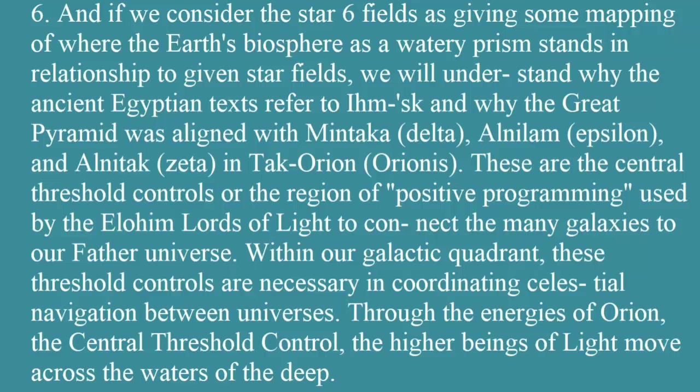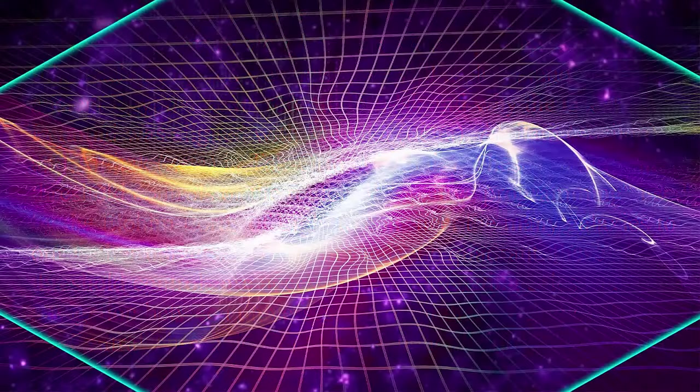These are the central threshold controls, or the region of positive programming used by the Elohim lords of light to connect the many galaxies to our father universe within our galactic quadrant. These threshold controls are necessary in coordinating celestial navigation between universes. Through the energies of Orion, the central threshold control, the higher beings of light move across the waters of the deep. If we can understand this all as a prism of water, with all these planets and stars floating in it...